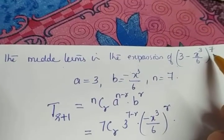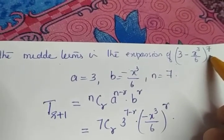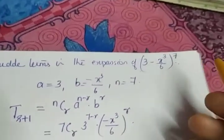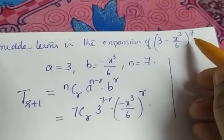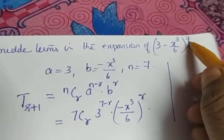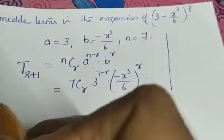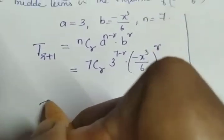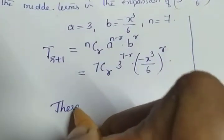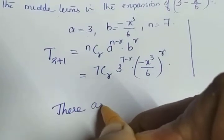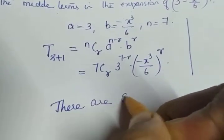We have to find the middle term. How many terms are there in the expansion? Since the power is 7, there will be 8 terms in the expansion.